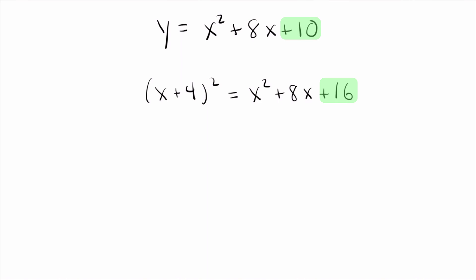I got 16, but I don't want to get 16. I just want to get 10. So here's where we can speed up the process. All we do is we say, I know if I took x plus 4 squared, my first two terms would match, but my last one wouldn't. I would get 16 when I wanted 10. Well, that's fine. How do you turn 16 into 10? You subtract 6.